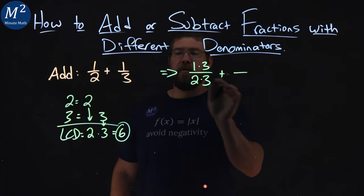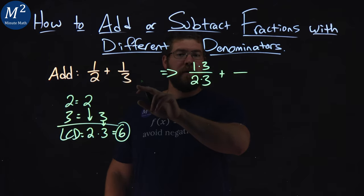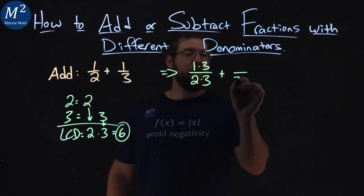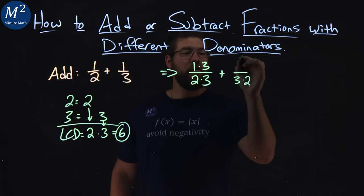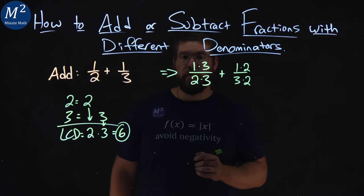Same thing here. 3, to convert with a denominator of 6, we have 3 times 2. We have to multiply the numerator by 2 as well.